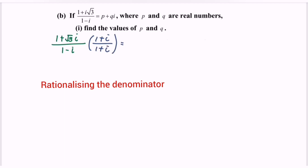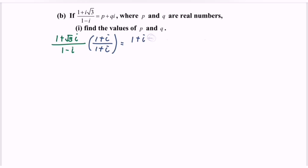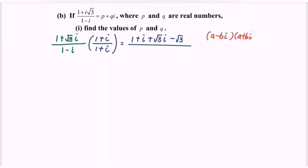Next, expand the numerator, where we will have 1 + i + √3·i - √3. Focus on the denominator, where we have the multiplication of conjugates — (a - bi)(a + bi) — which gives a² + b².